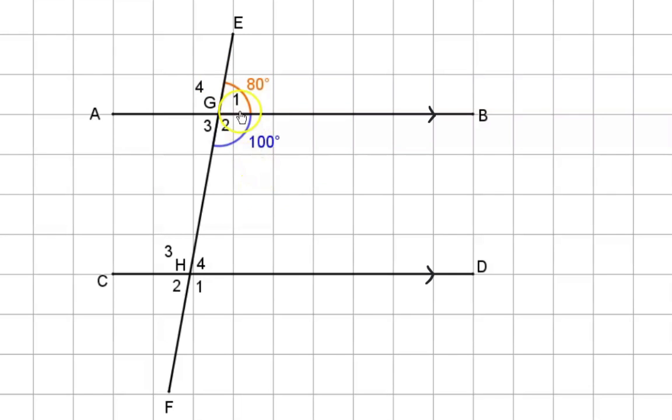But because we have parallel lines, we also know that g1 and h1 are equal in size because of corresponding angles.